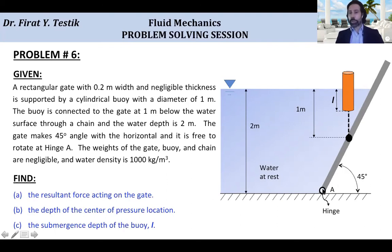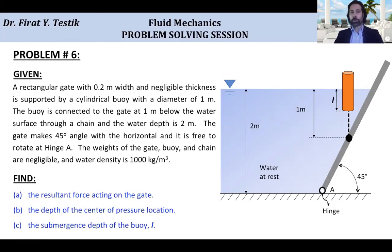This gate is free to rotate around hinge A, and we will consider this instant. The weights of the gate, buoy, and chain we will assume are negligible for the problem solution, and we will consider that water density is 1000 kilogram per meter cubed. For this given problem statement, we are asked to find the resultant force acting on the gate — the pressure forces acting on this gate — the depth of the center of pressure location, which is where the resultant force acts, and in part C, we are asked to find the submergence depth L for the buoy.